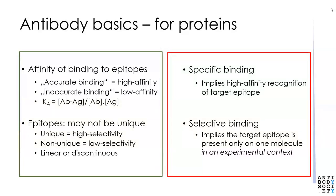An antibody can be highly specific for an epitope, yet if that epitope is present on many proteins, it is then poorly selective. This causes a lot of confusing results and we will discuss it in detail later in this series. If you find it confusing, think of an antibody CDR as walking boots without the chirality. My feet are their targets, the epitopes. The boots fit me well, so they are highly specific, but they're poorly selective because they fit many people. They are fit for purpose. On the other hand, if an antibody is highly specific but poorly selective, you may well find that it's not fit for purpose, as we'll see later in this series.